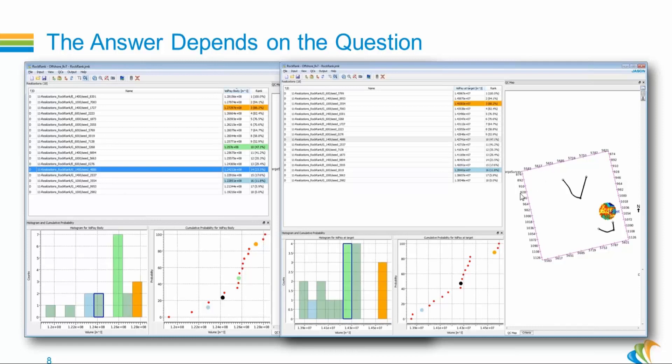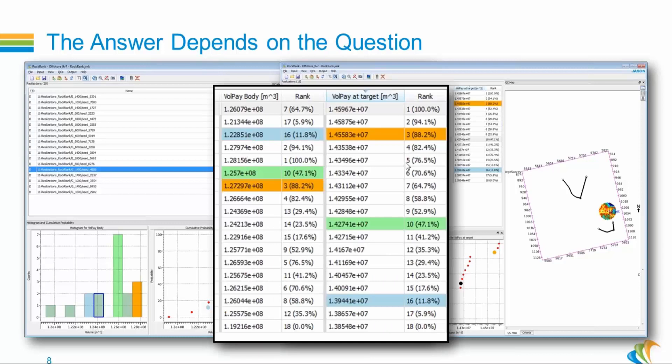So with the Jason ranking tool, you can actually compute multiple ranking criteria and compare the ranking of the same realizations depending on the criteria. So if we zoom on this comparison, you will see that the P10, P50 and P90 realizations are not the same depending on the criteria. Remember, they are color coded with orange, green and blue. The order is here from the right hand side from the volume of pay at the target well. And you can see that the P10 realization for this one is actually the P90 realization for the volume of pay in the largest body.